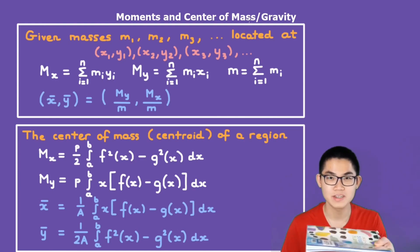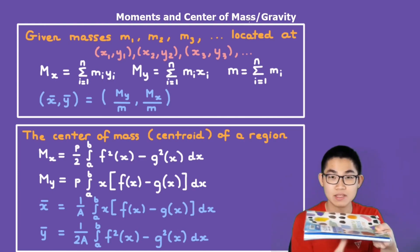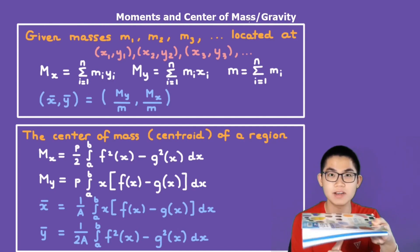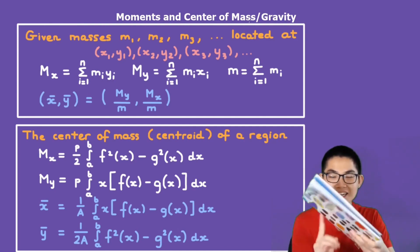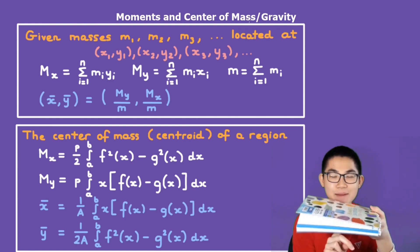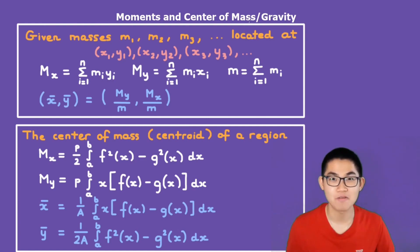So what exactly is the center of gravity? Well, let's say you have a book. If you try to balance it, there's a point where the book is perfectly balanced. If I release this hand, it's going to be perfectly balanced. And that point is called the center of gravity.